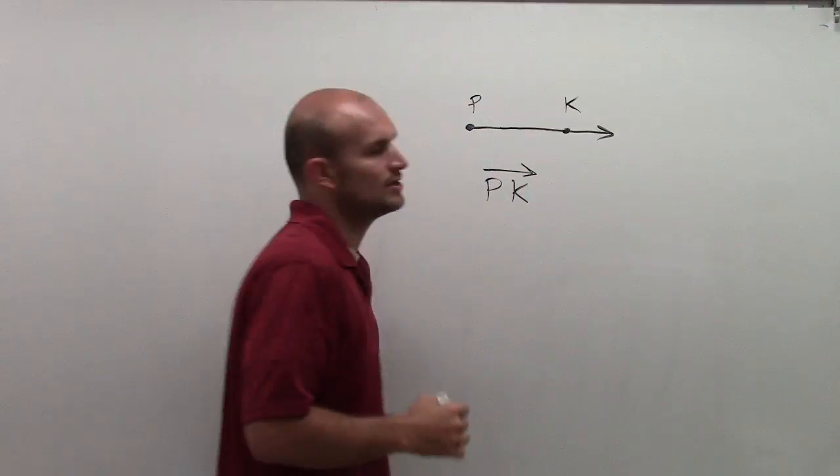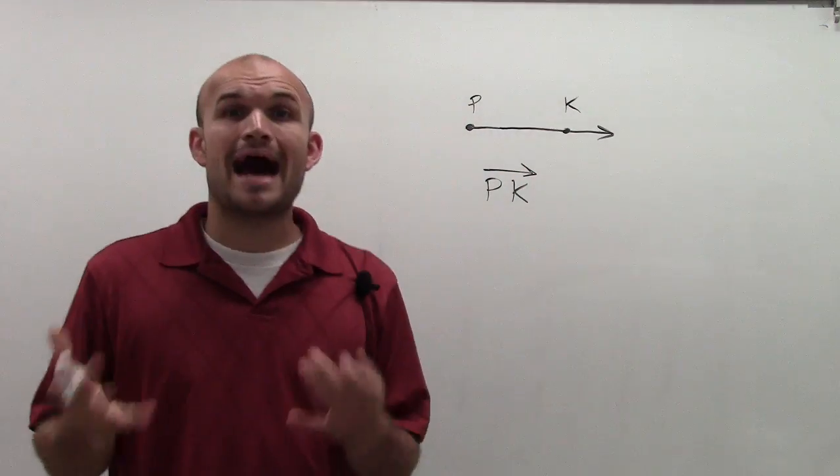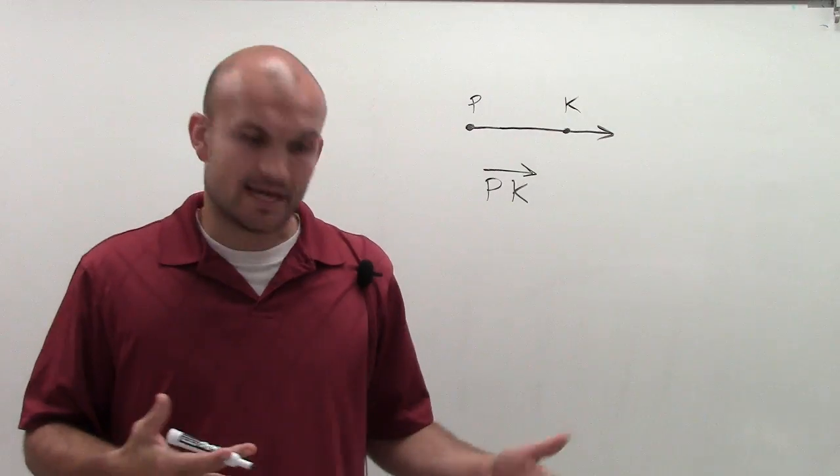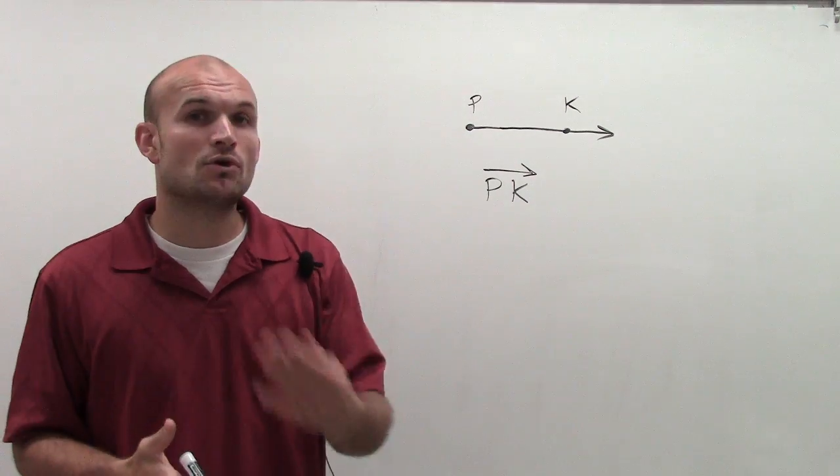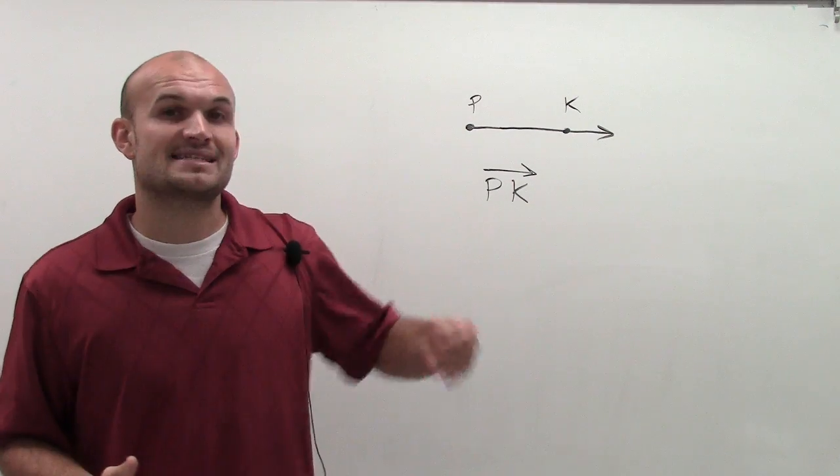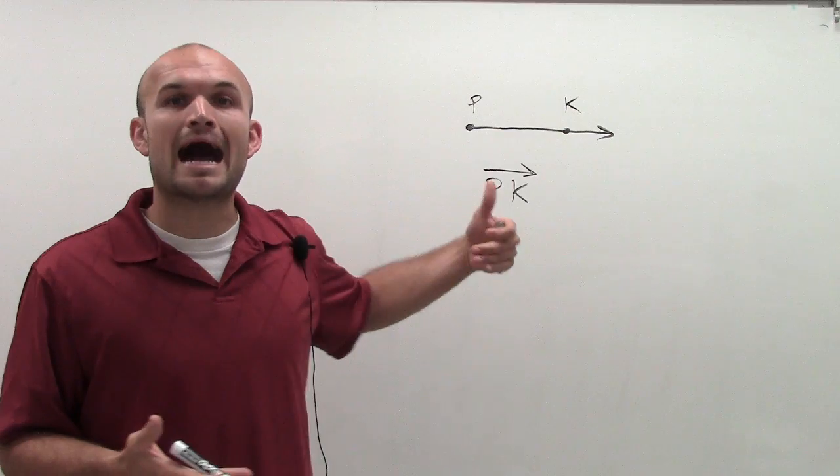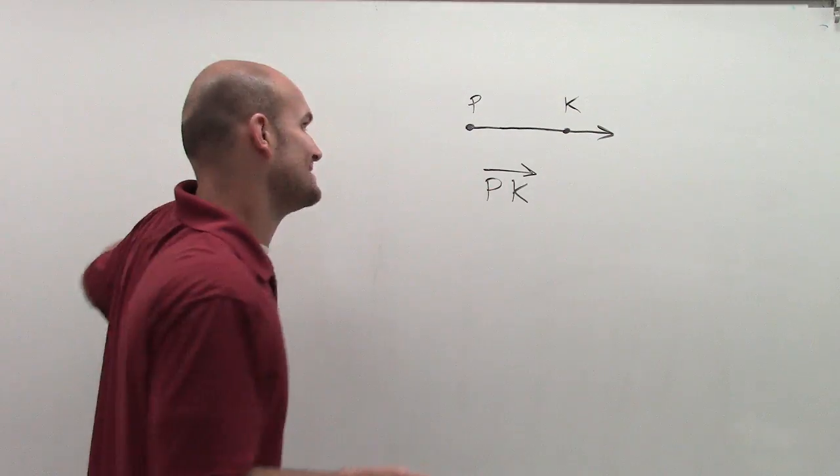And that's how I'd represent the ray P, K. Now, the opposite ray of P, K would be a ray that's going to have the exact same endpoint and goes through a point that is not K, but that's actually going to go in the opposite direction. That's going to create a straight line.